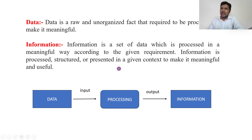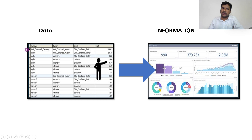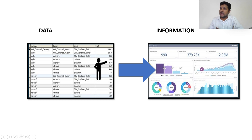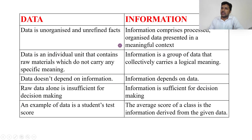For example, I have an MS Access file containing raw data. Nobody can easily understand it in its raw form. When I convert it into a graphical dashboard, everyone can understand it easily and take decisions — like whether sales are increasing or decreasing, how manufacturing is going, or how cost is affecting sales. That is the difference between data and information, with processing in between.